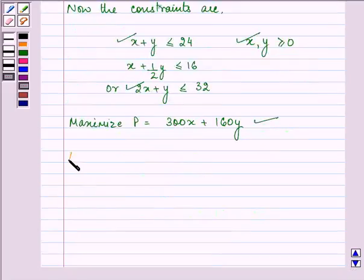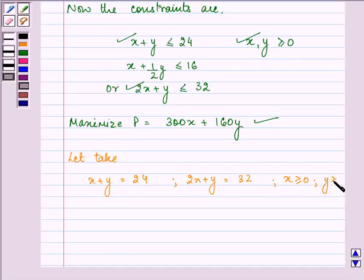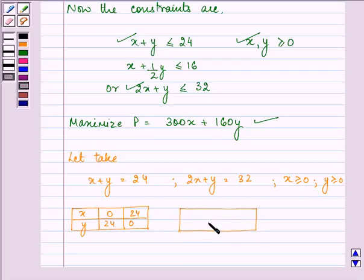Now let's take x plus y equal to 24, 2x plus y equal to 32, x greater than or equal to 0 and y greater than or equal to 0 separately. Now here we will be finding out two points for these equations. For the first equation, when x is 0, y is 24, and when y is 0, x is 24. For the second equation, when x is 0, y is 32, and when y is 0, x is 16.